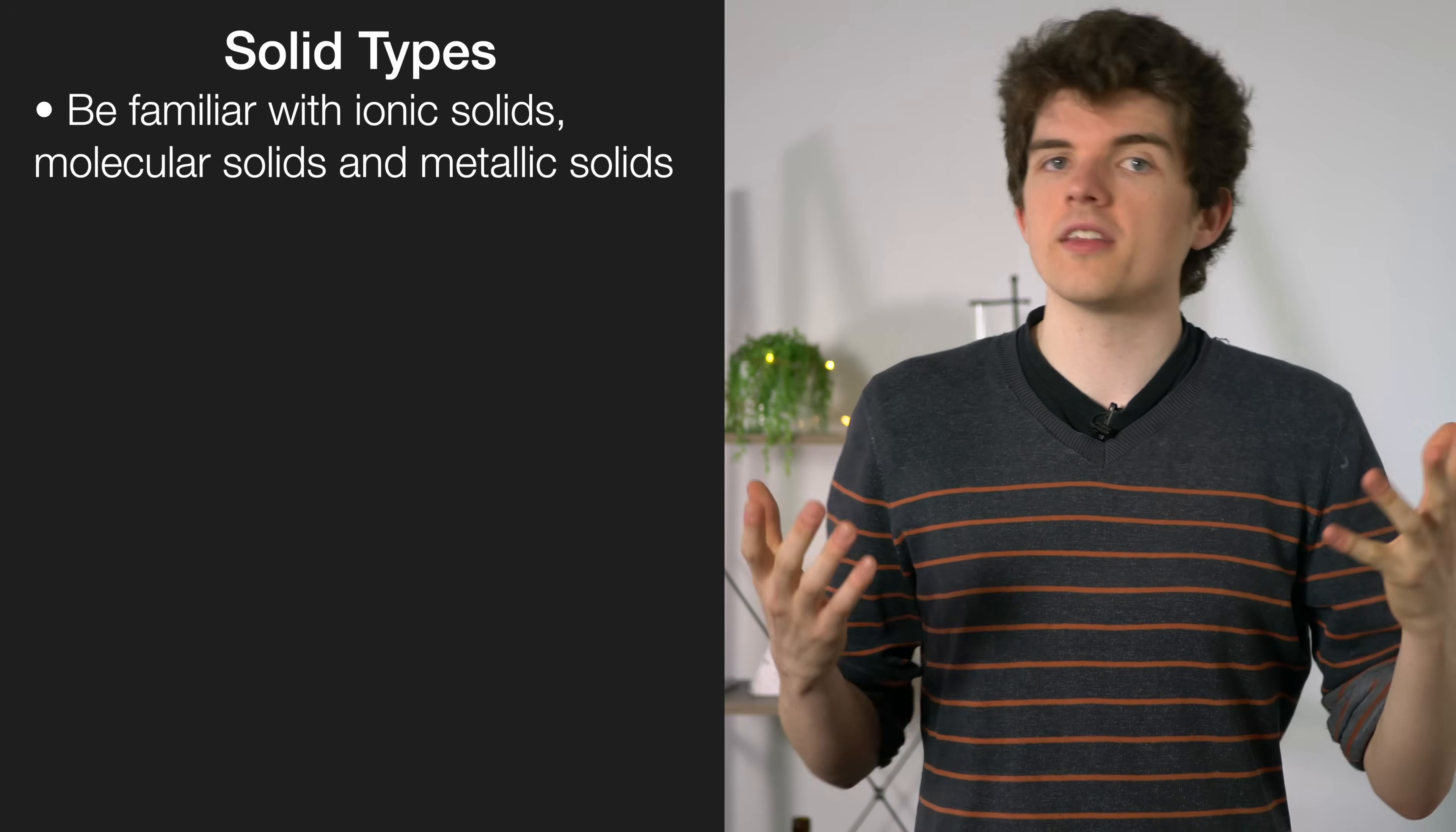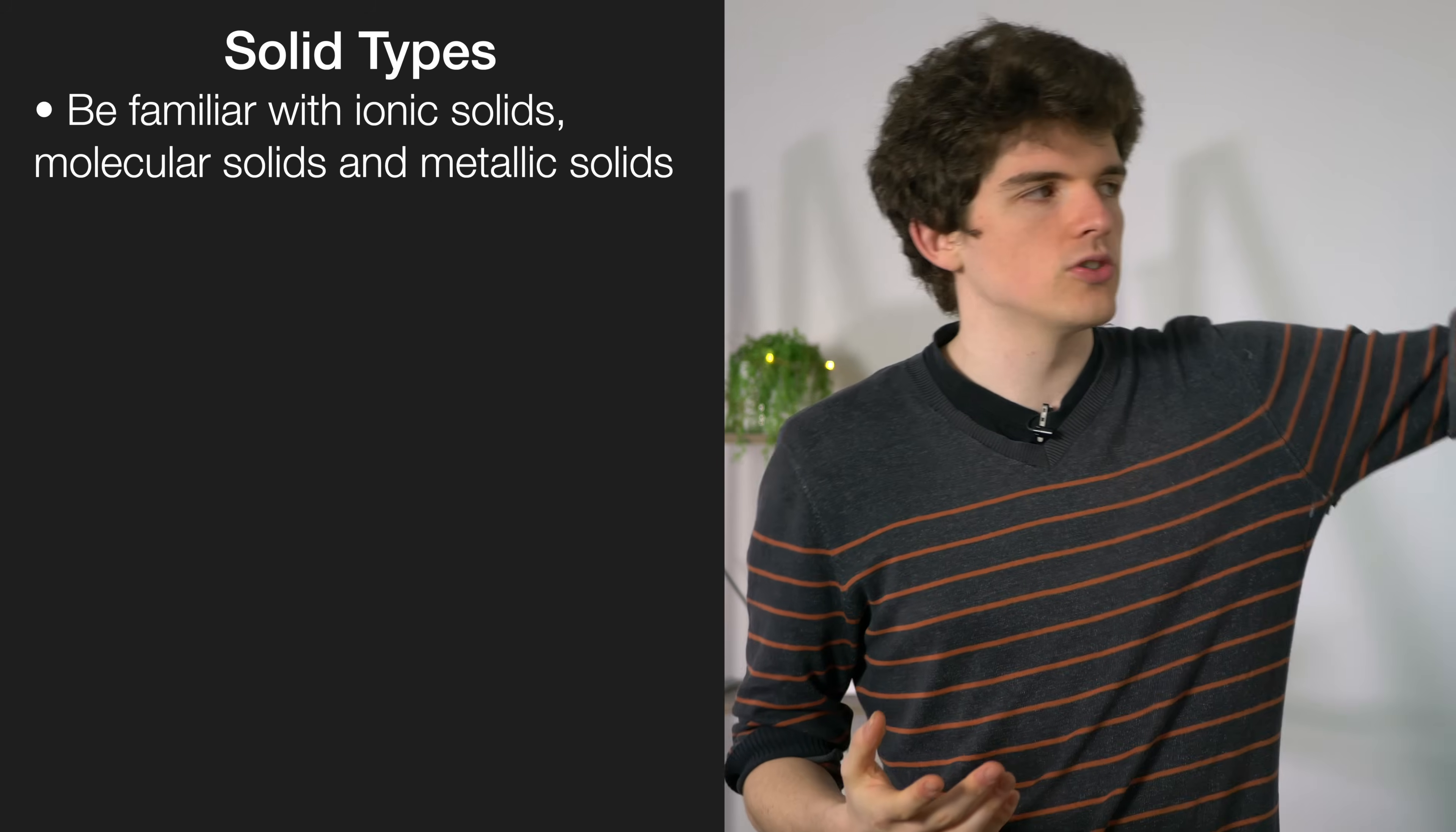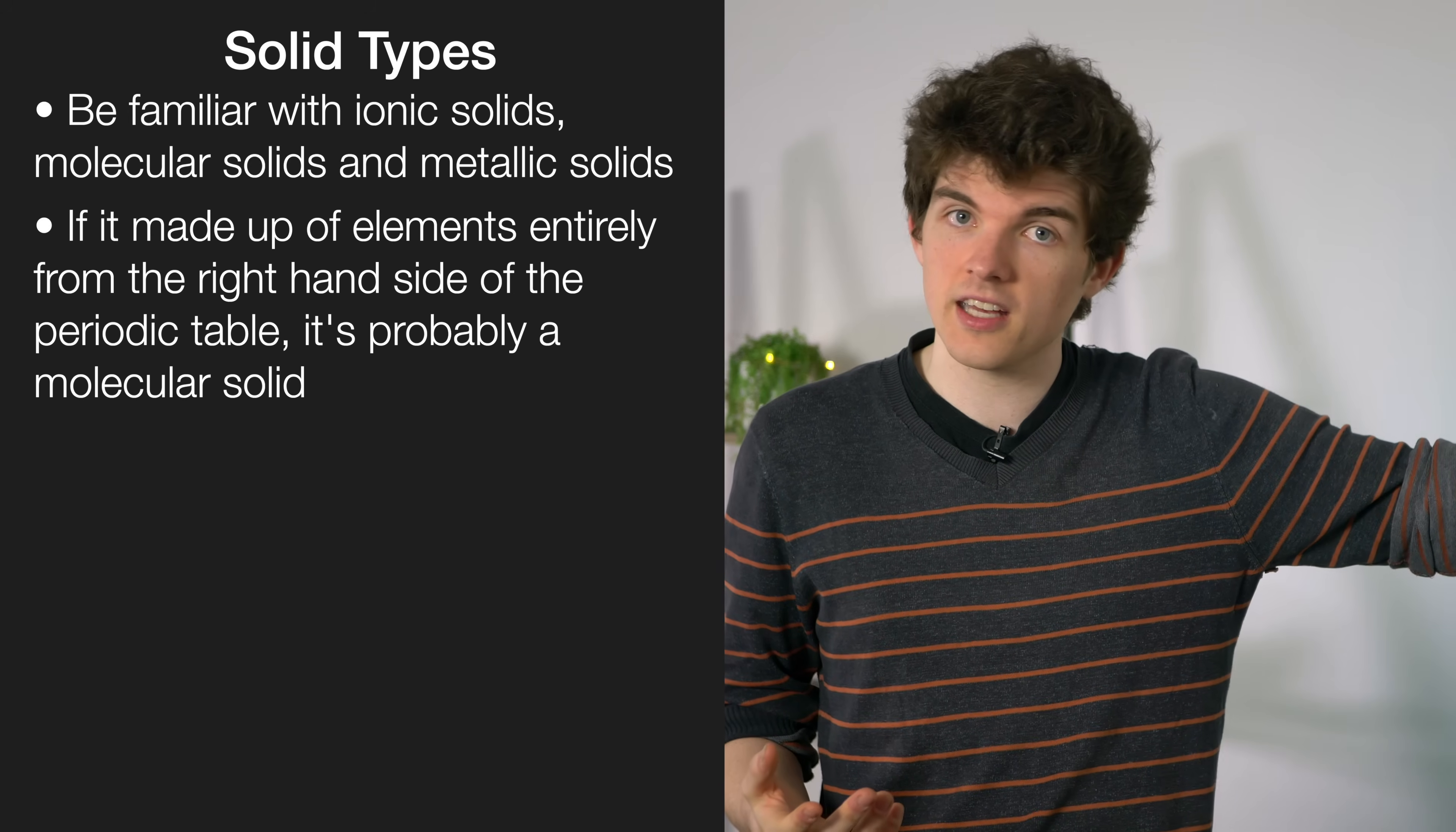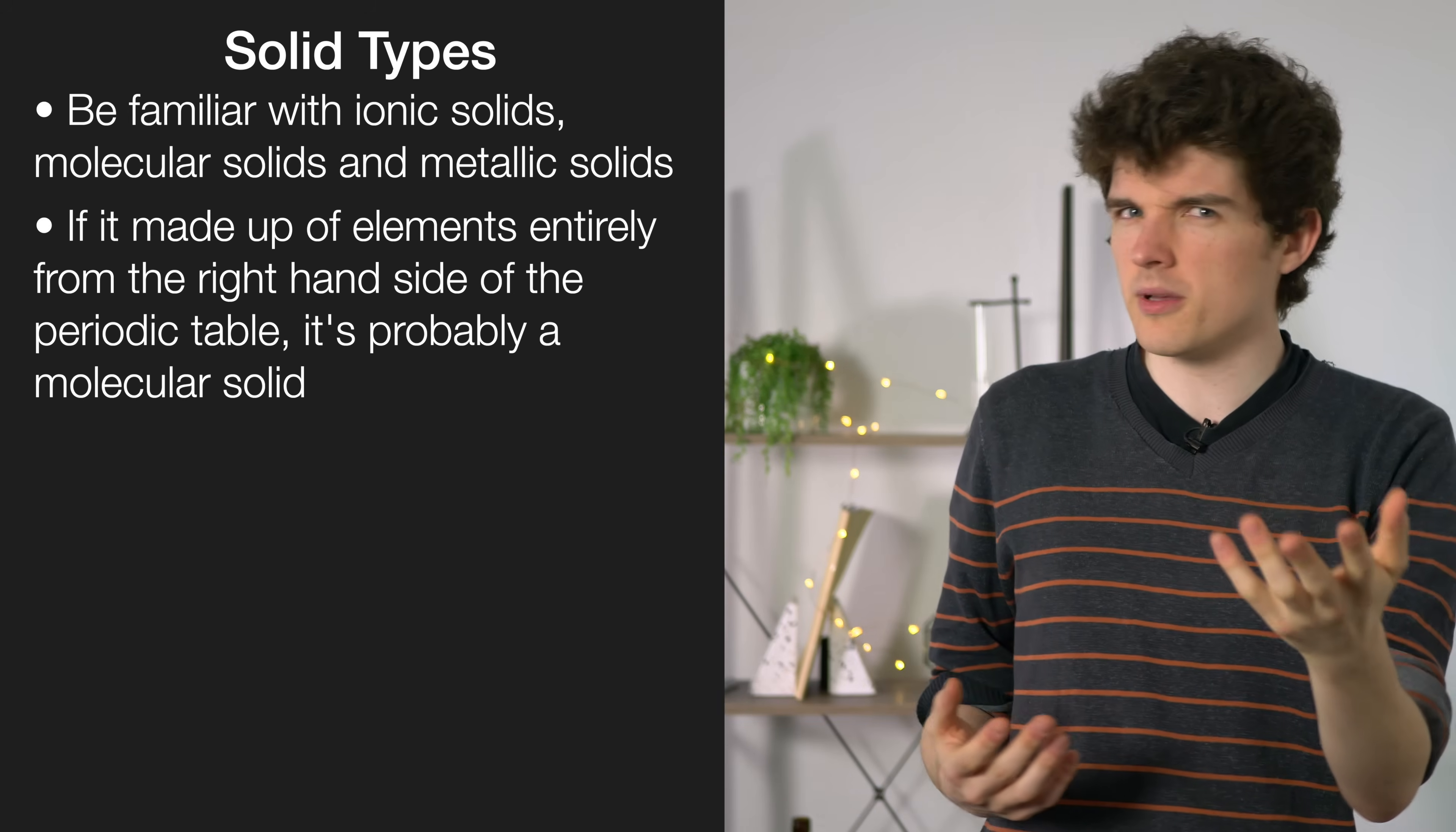One way to think about it is where things are in the periodic table. If you see something that's made up of elements entirely from the right-hand side of the periodic table, it's probably a molecular solid.